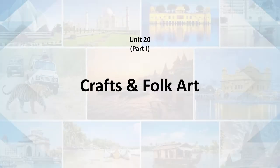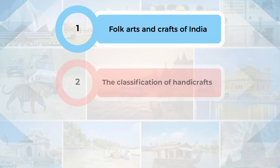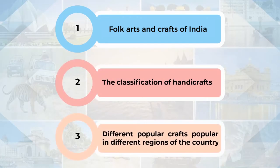Hello, listeners. We are going to cover the TS2 Block 5, which has the chapter in the name of Crafts and Folk Art. The main objectives we are going to discuss here would be the Folk Art and Craft of India, the classification of the handicrafts, and the different popular crafts which are popular in different regions of the country.